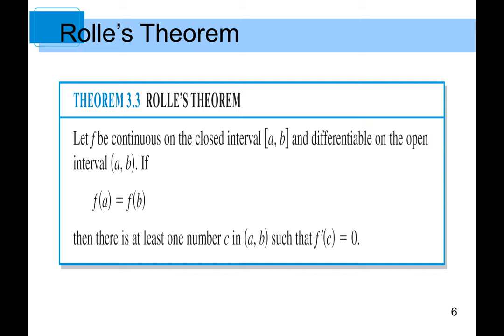Let's take a look at the theorem itself. If f is continuous on a closed interval [a, b] and differentiable on the open interval (a, b), and if f(a) equals f(b), then there is at least one number c in (a, b) such that f prime of c equals zero — meaning we're looking at a horizontal tangent line.